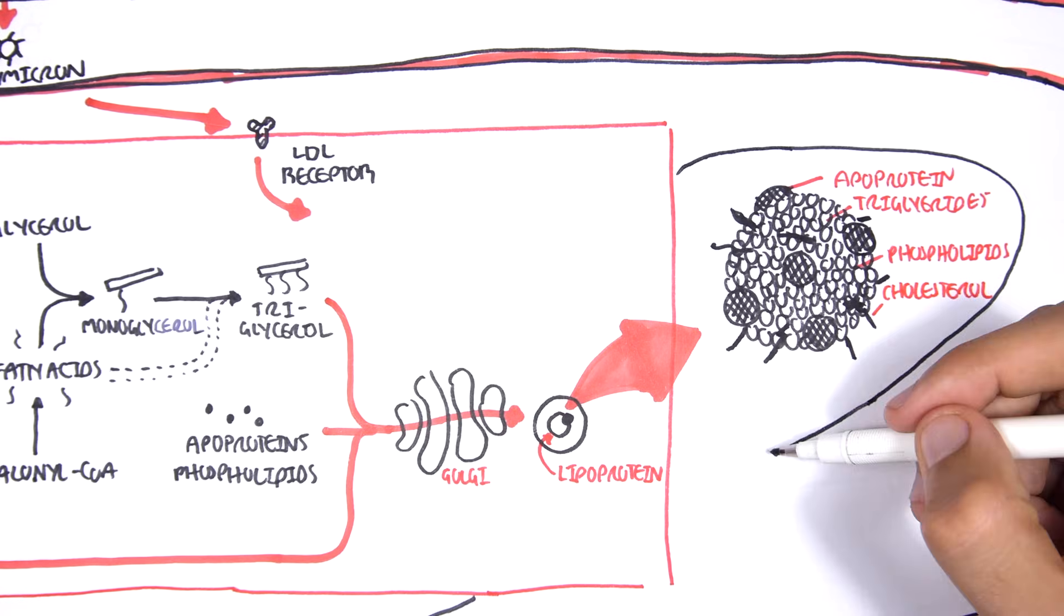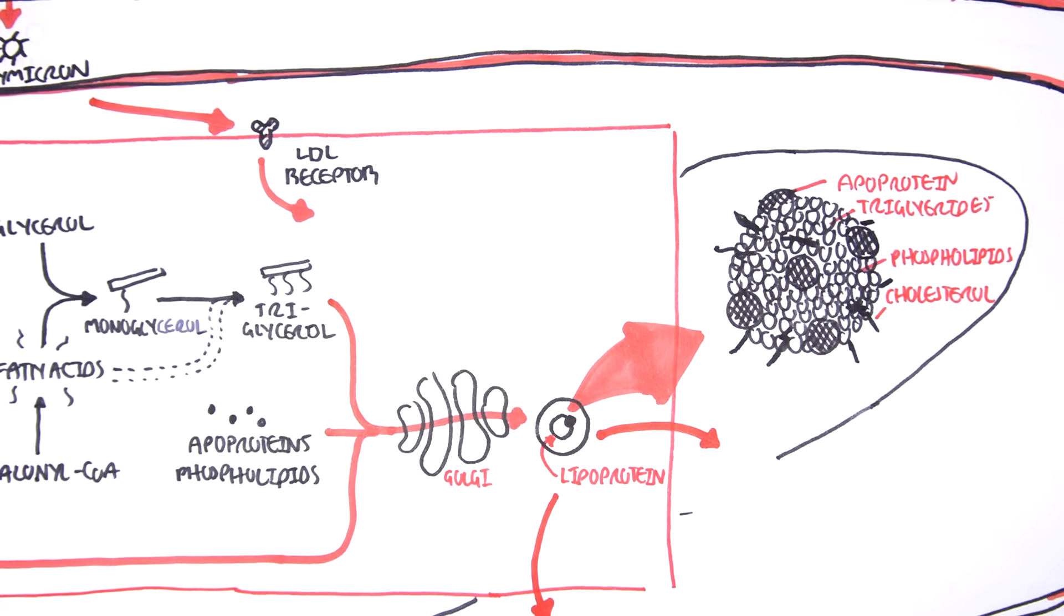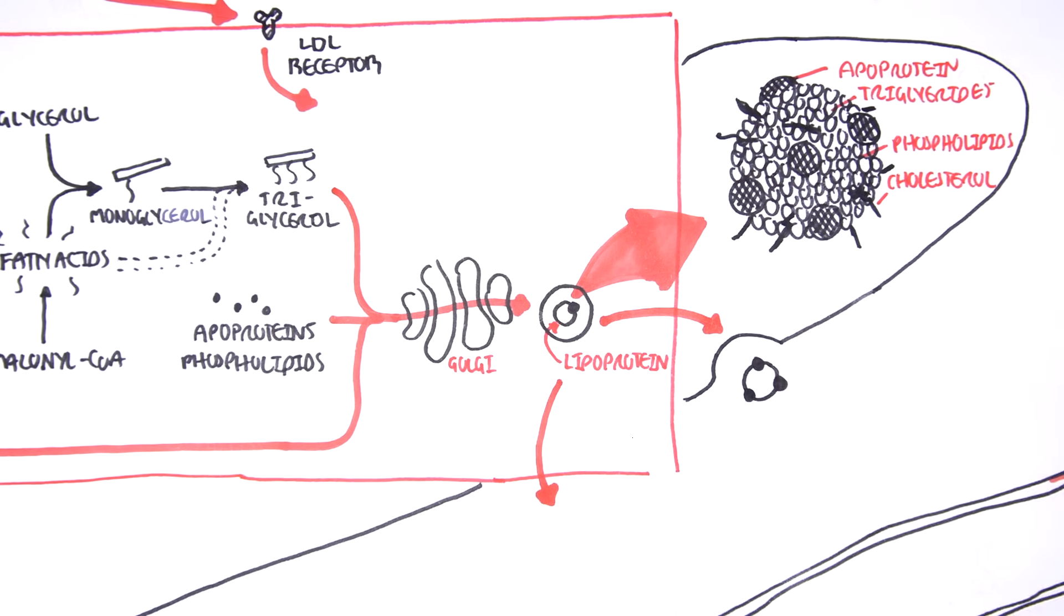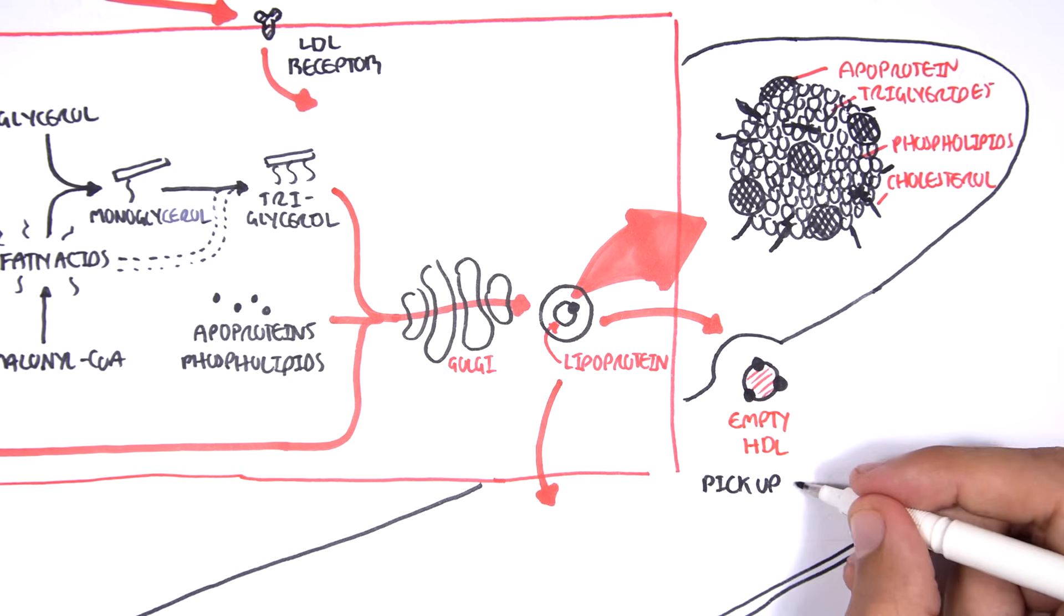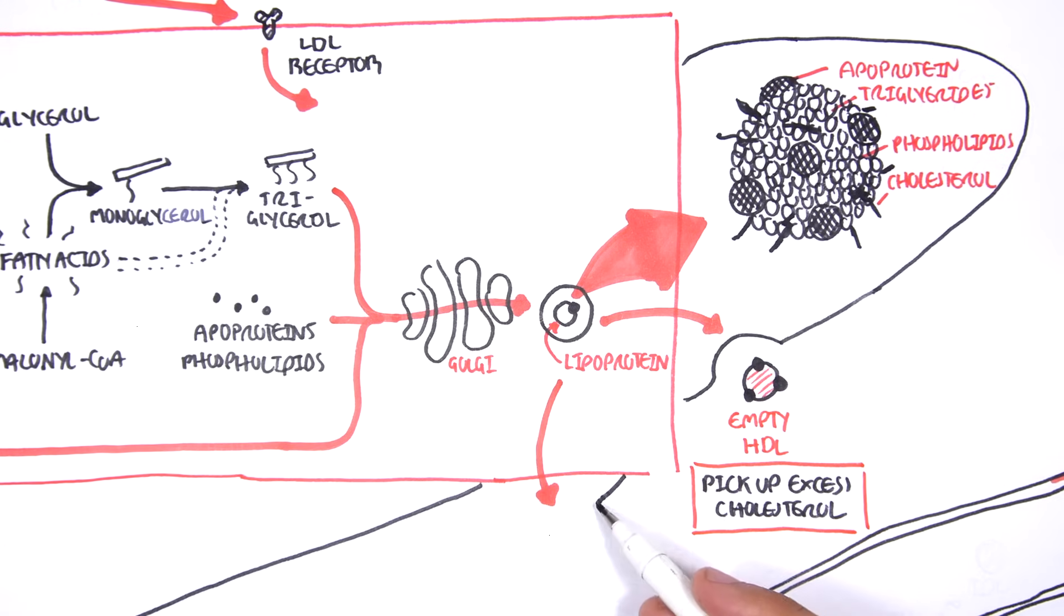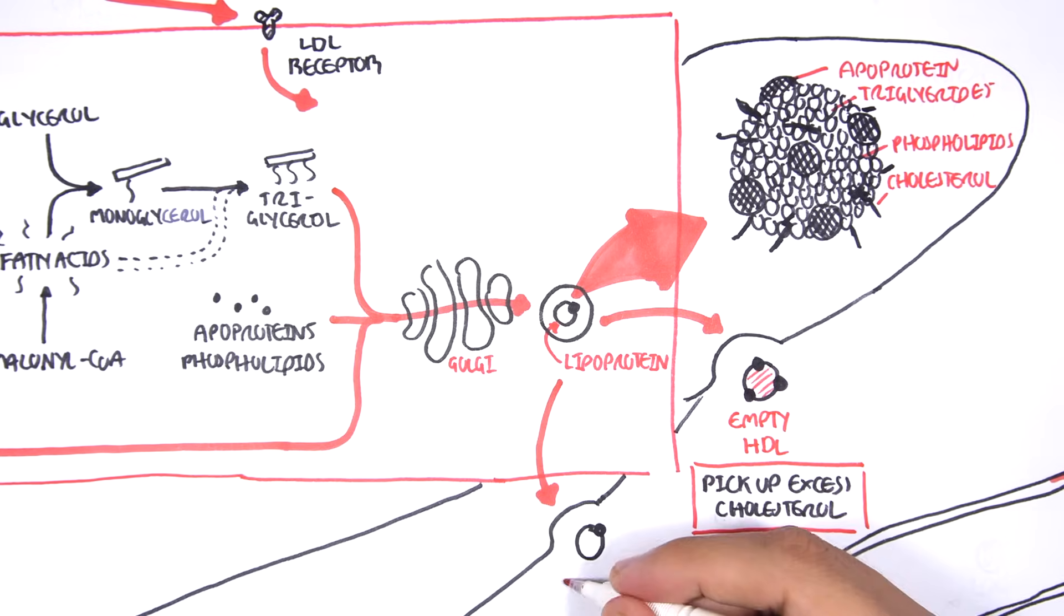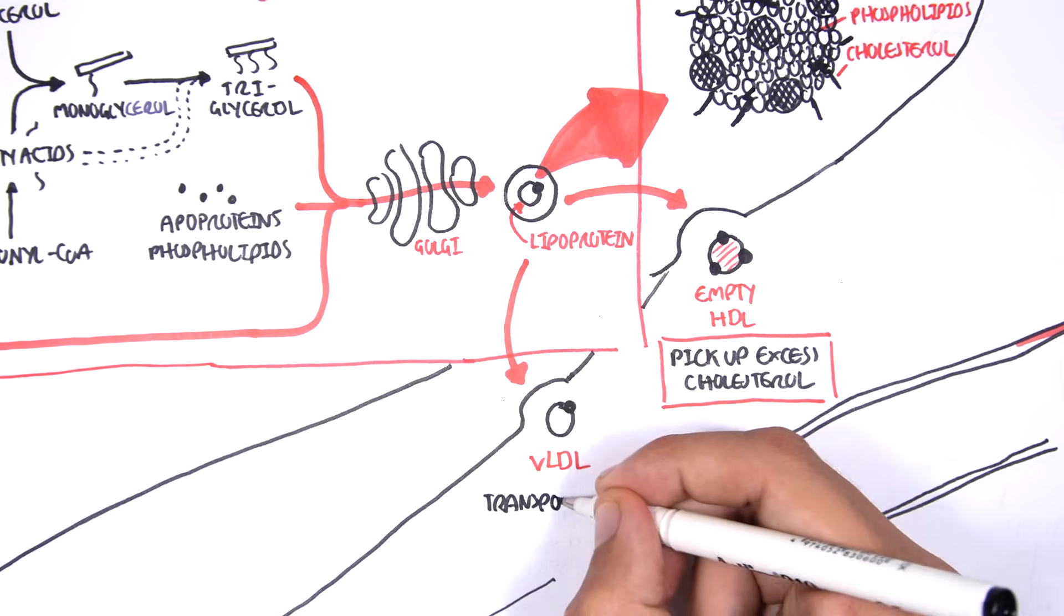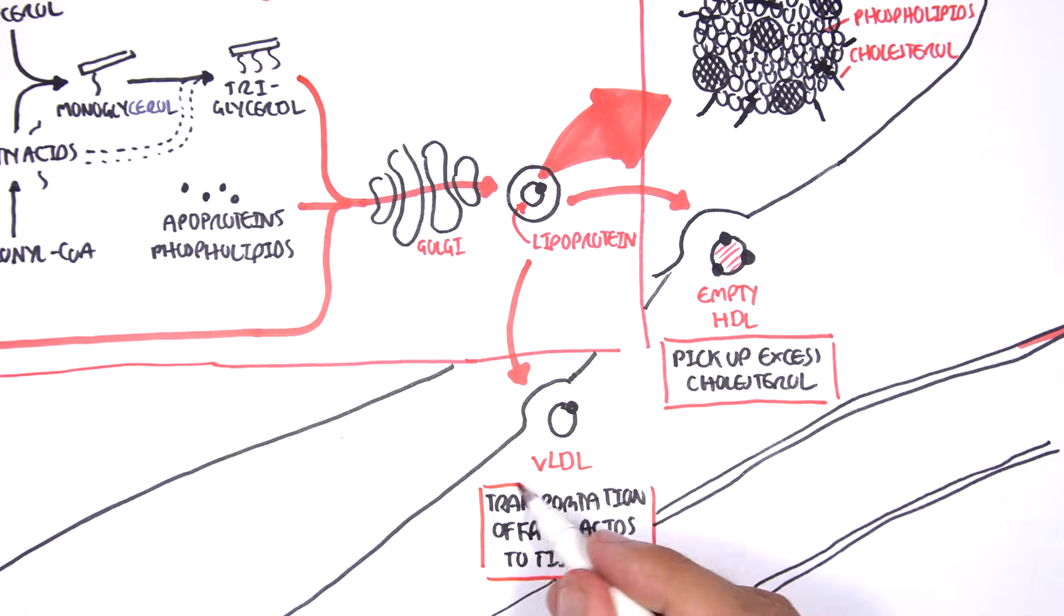The liver cannot actually make all the lipoproteins. They make two: either the empty HDL, whose main function is picking up excess cholesterol from the body and bringing it back to the liver, or VLDL (very low-density lipoproteins), whose main function is the transportation of triglycerides to body tissues.